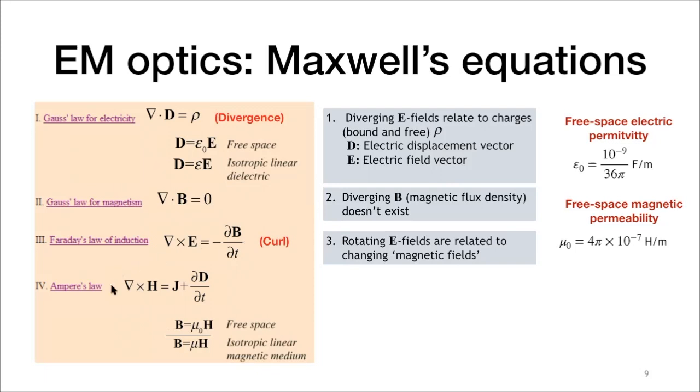And the fourth law, Ampere's law, is the other way around. Curl H equals J, which is the current, the electric current, plus variation of the displacement vector with time. In other words, rotating magnetic fields are related to time varying displacement currents, D or J.